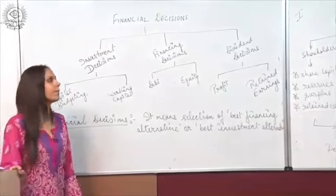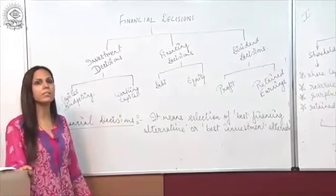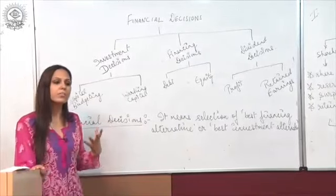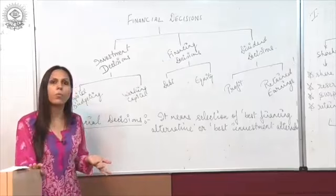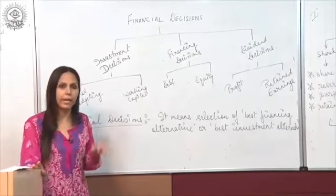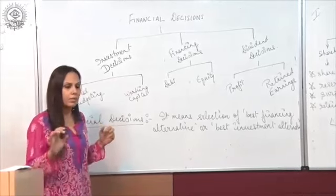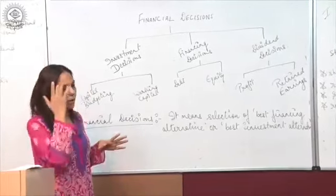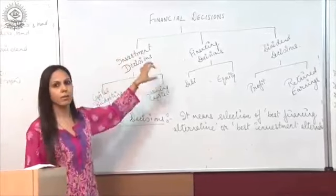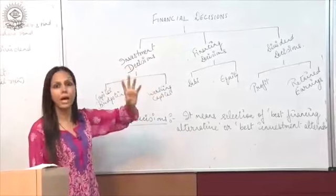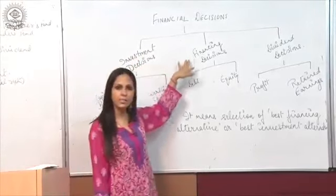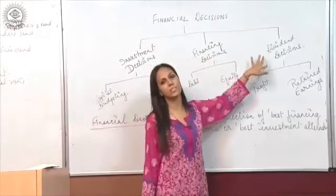We will start with the next topic, that is financial decisions. So what are financial decisions? What financial decisions is a company supposed to take? Broadly, a company has to take three main decisions related to finance: the first one is investment decisions, financing decisions, and dividend decisions.